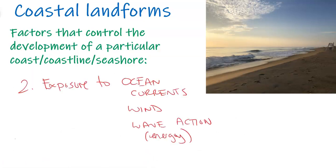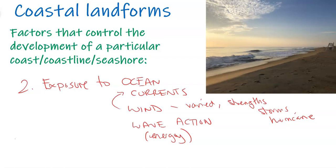The next thing that helps develop the coastline is exposure to ocean currents, wind, and wave action. The wind could be varied, of different strengths, and could involve storms, hurricanes, tropical cyclones — hurricanes in the Atlantic, typhoons and cyclones in the Pacific. Wave action is related to energy and ocean currents, which are also dictated by the wind and density differences from temperature and salinity. Wave action can be varied or consistent; it depends on the fetch, the location, and the wind — and these can all help to develop and characterize the coastline.